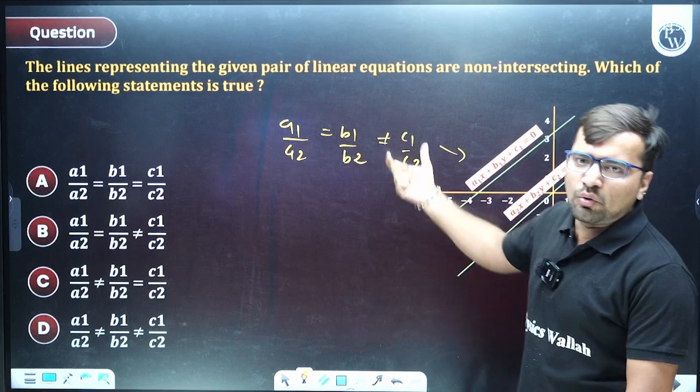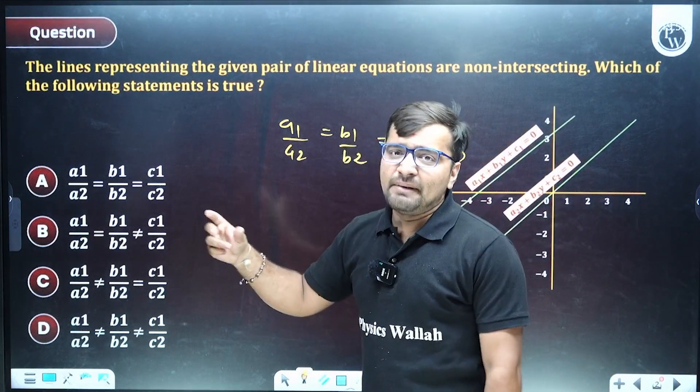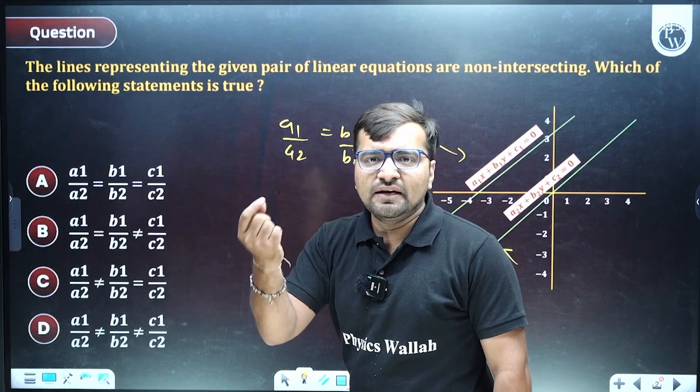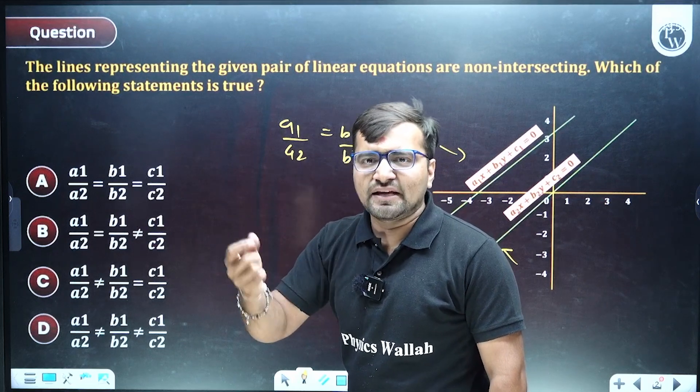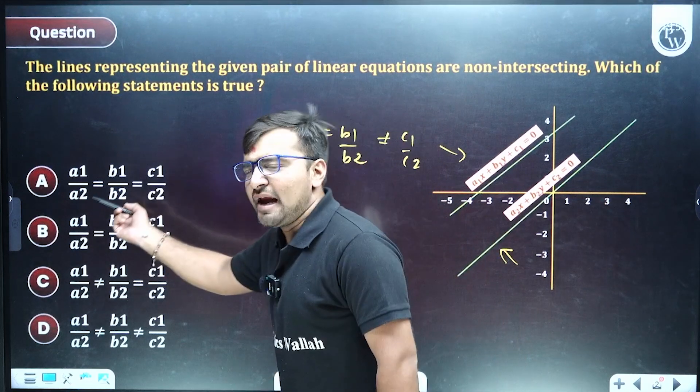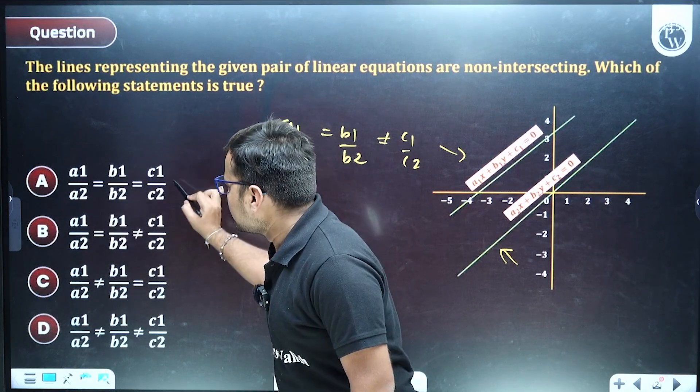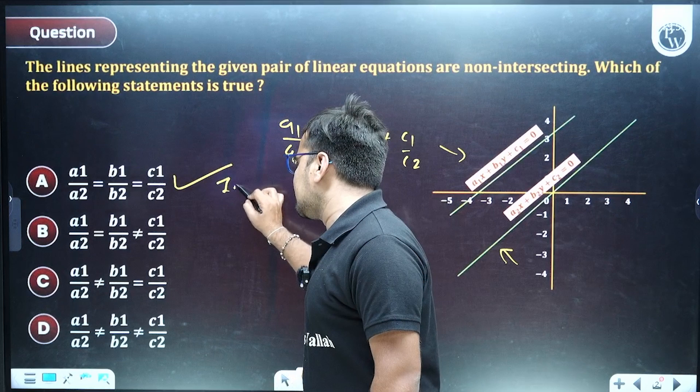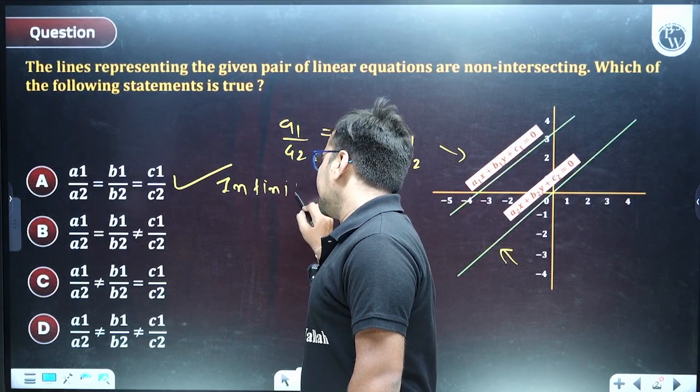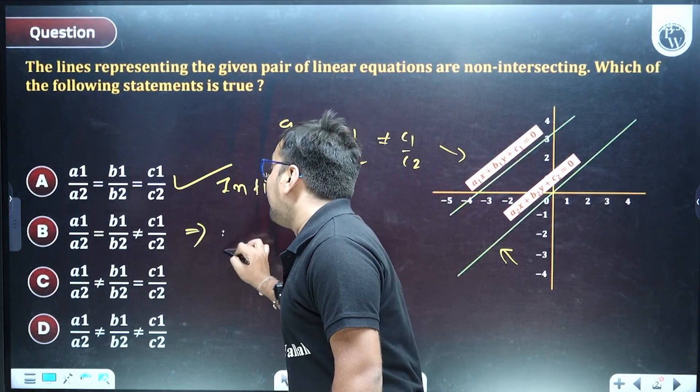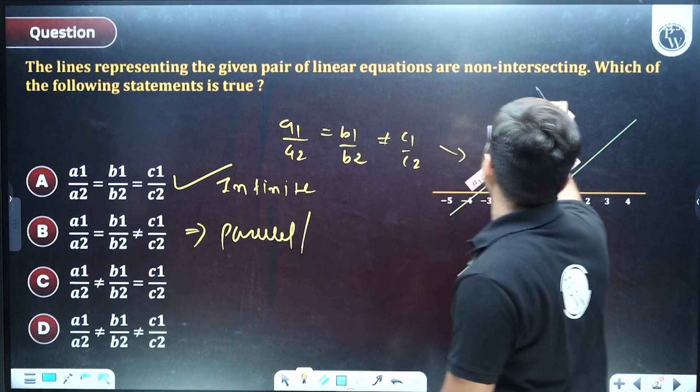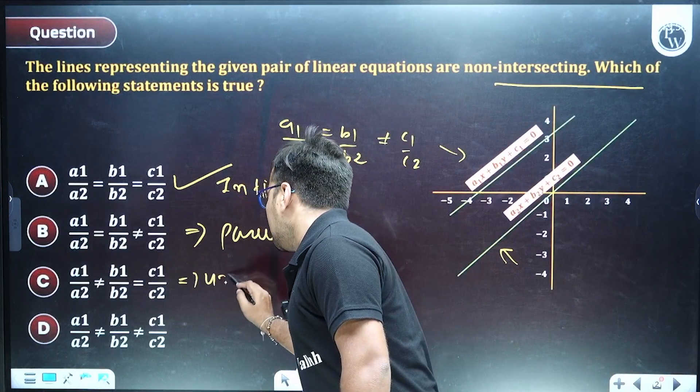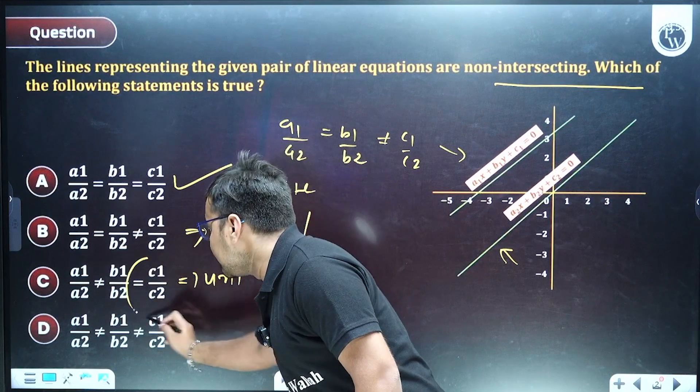It means your constant terms are different, remaining two coefficients a1, b1 for the first linear pair of lines, and another a2 and b2 are also same. So this is the condition for infinite many solutions. Remember this is for parallel lines or also you can say non-intersecting lines.